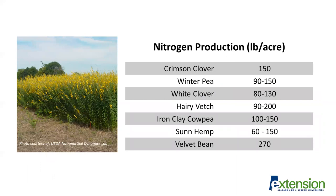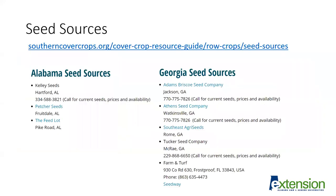To go a bit more in depth with legumes — this gives an example of nitrogen production per acre. Many of our clovers and vetches will produce approximately 100 to 150 pounds of nitrogen per acre, depending on the stand. Not all of that nitrogen is going to be available to the subsequent crop, but we can typically get about a 30 to 50 pound nitrogen credit on the subsequent crop per acre when we follow a legume. A very practical consideration when selecting cover crops is where you can get seed. On the southerncovercrops.org website we have some seed sources listed by state, including several in Alabama.